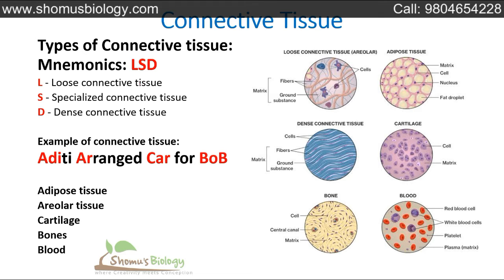Next we look at connective tissue. The easy way to remember the three types of connective tissue is the mnemonic LSD: L for loose connective tissue, S for specialized connective tissue, and D for dense connective tissue. Just like LSD is a drug that drives people crazy, remember loose, specialized, and dense connective tissue.